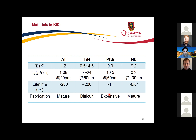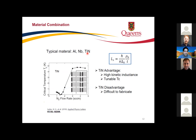Titanium nitride is challenging to fabricate, but if you have enough experience you can bring its critical temperature below 1 K, making it one of the popular materials for the optical range. Another technique to decrease critical temperature is the proximity effect: when you place a normal conductor over a superconductor, the normal conductor becomes superconducting because Cooper pairs effectively leak into it.